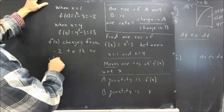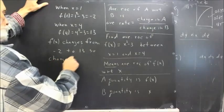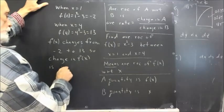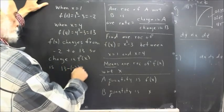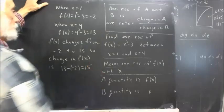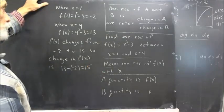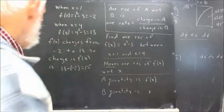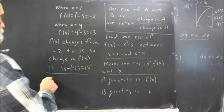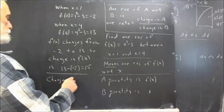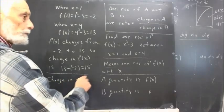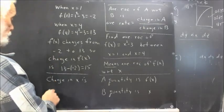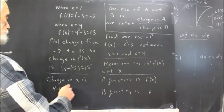The change in F(x) is 13 minus (−2), which equals 15. We changed from −2 to 13. The change in x is 4 minus 1, which equals 3.